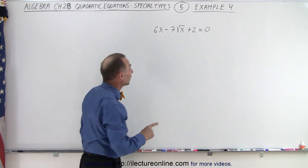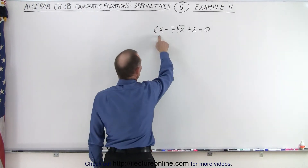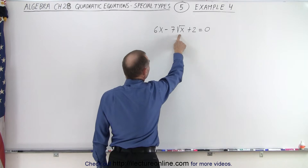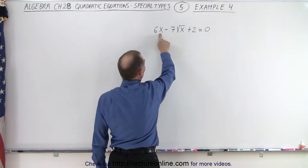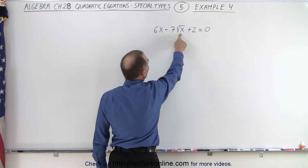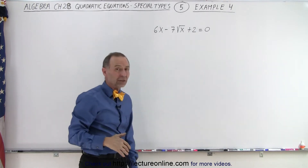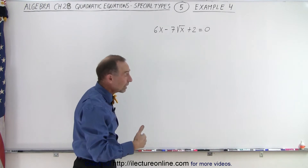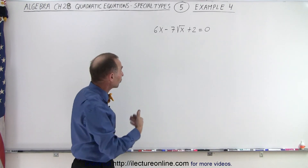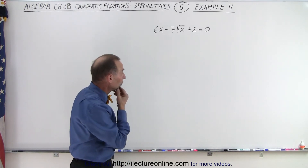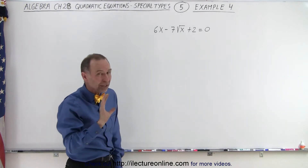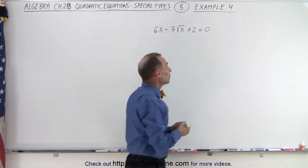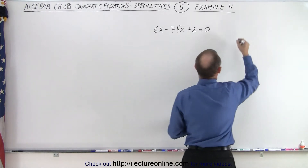But notice that x to the first power and the square root of x — this has double the power of this. Because if you take x to the one half and double the exponent one half, you get x to the first power. So we can actually think of it as a quadratic equation when we think of it in these terms.